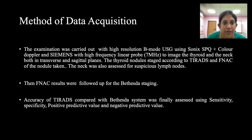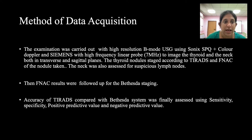Examination was carried out with high-resolution B-mode ultrasound using SONICS SPQ color Doppler plus Siemens with a high-frequency linear probe, imaging the thyroid and neck in both transverse and sagittal planes. Thyroid nodules were staged according to the TIRADS system. FNAC of the nodule was taken, and the neck was assessed for suspicious lymph nodes. FNAC results were followed up for Bethesda staging, and accuracy of TIRADS was assessed by sensitivity, specificity, positive predictive value, and negative predictive value.